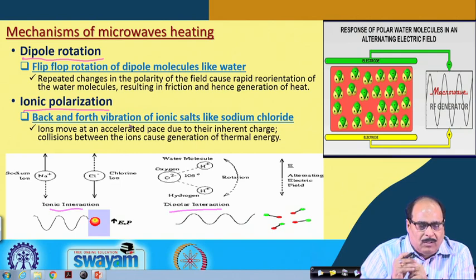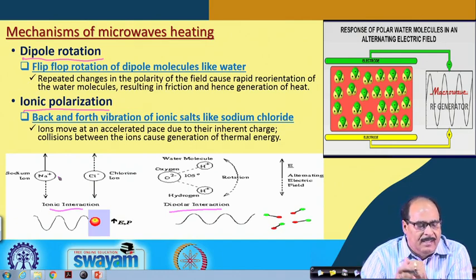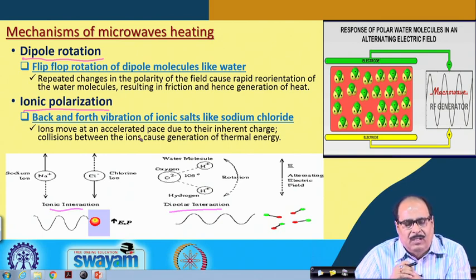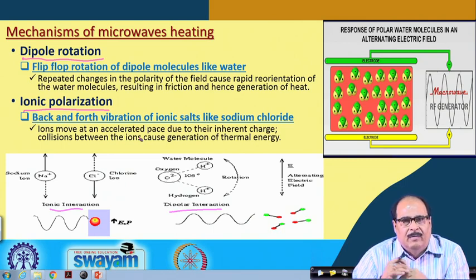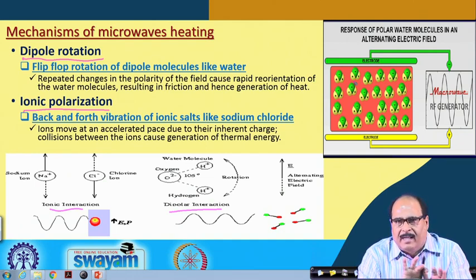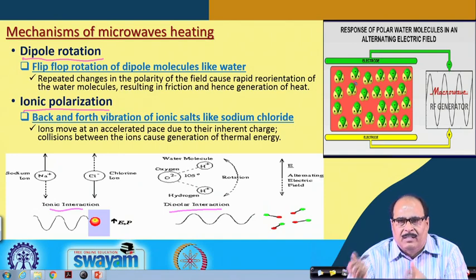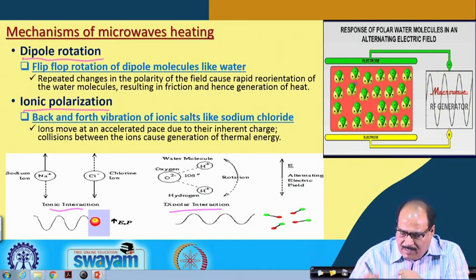Back and forth vibration of ionic salts like sodium chloride — with positive sodium ions and chloride ions — causes these ions to move at an accelerated pace due to their internal charge, and collision between these ions generates internal energy. The main principle is that oppositely charged ions in the microwave field try to realign towards the opposite charge of the microwaves, causing molecular movement and friction, which generates heat.